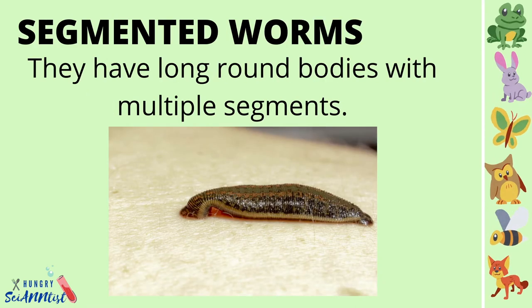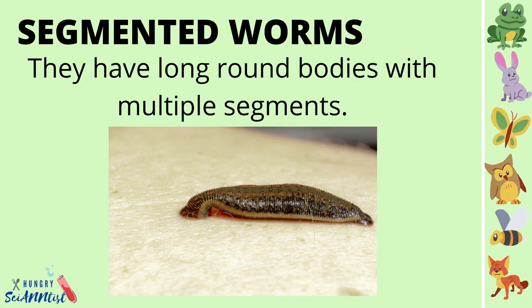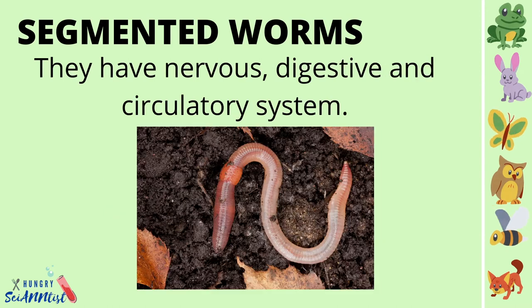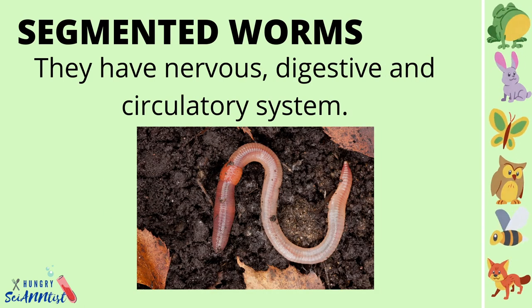Segmented worms have long, round bodies with multiple segments. They have nervous, digestive and circulatory systems.